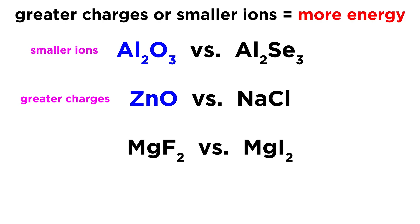Looking at MgF₂ versus MgI₂ — magnesium is the same, so let's look at fluorine and iodine. They're in the same group, so they'll both become minus 1, as fluoride and iodide. So it's not about charge. But iodide is much larger than fluoride, so MgF₂ has a smaller interionic distance than MgI₂. Smaller ions, smaller interionic distance — magnesium fluoride is going to have the greater lattice energy.